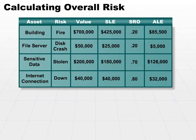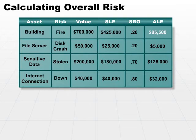Let's back this up a little bit. If we expect to lose a building once every five years to fire, and we expect to lose $425,000 in value from that building, that means that every year we have to budget $85,500 as our loss. If you multiply that times five, then we would have a total loss of $425,000.